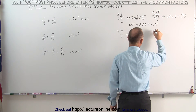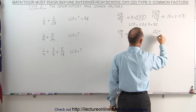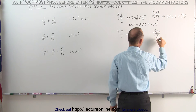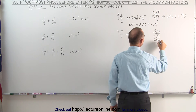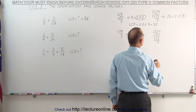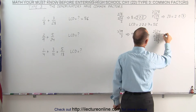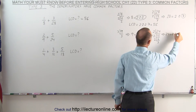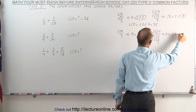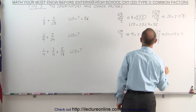Now we take the denominator 24. Since it's even, we can divide it by 2, which gives us 12, divided by 2, which gives us 6, divided by 2, which gives us 3. That means 24 can be written as 2 times 2 times 2 times 3.